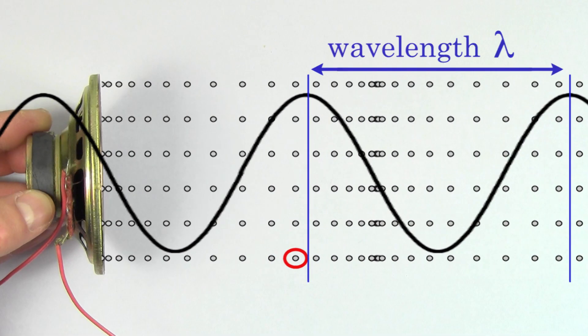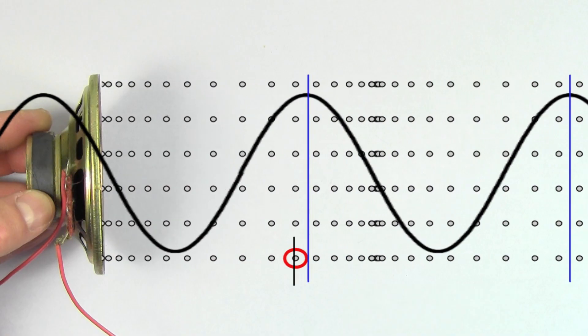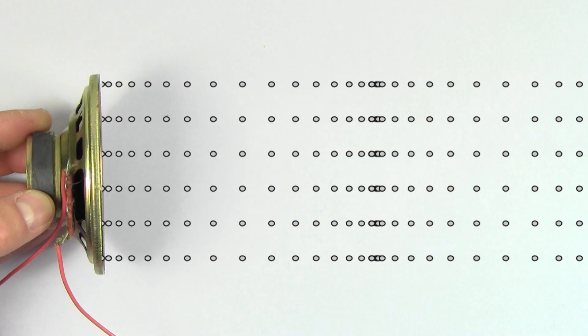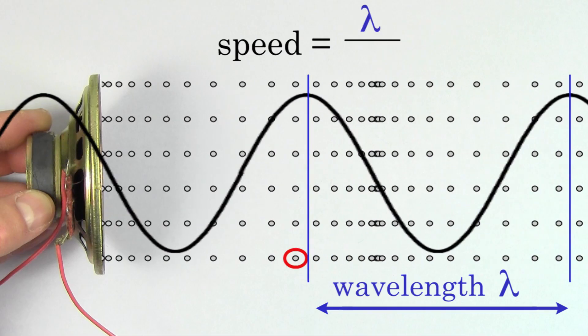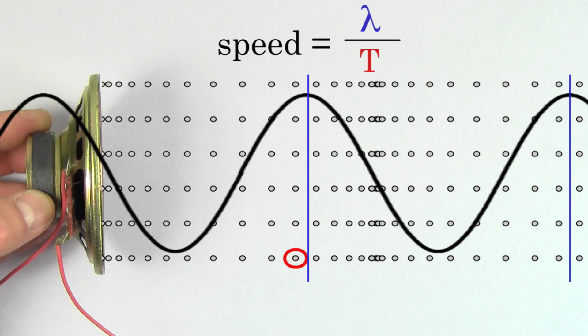This is because the wave has to overlap with its initial shape after one period, because the molecule has to be back where it started after one period. Now since speed is defined to be the distance per time, the speed of a sound wave has to be the wavelength of the wave divided by the period of the wave, since the wave is traveling forwards one wavelength per period.